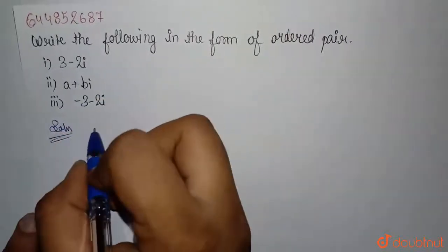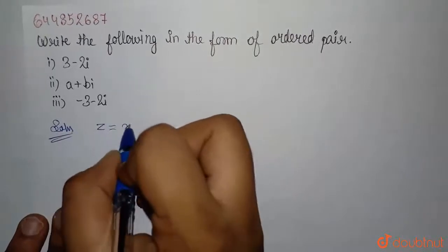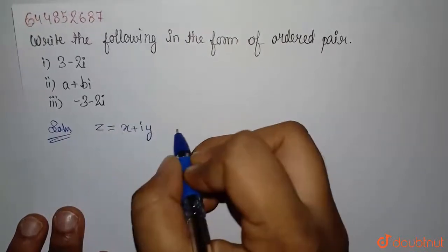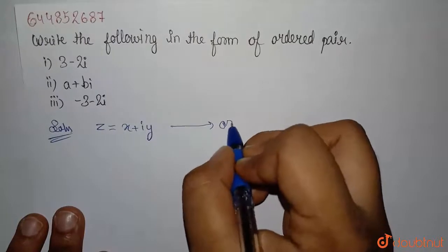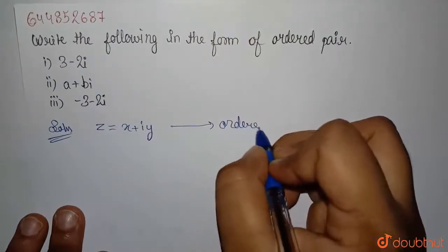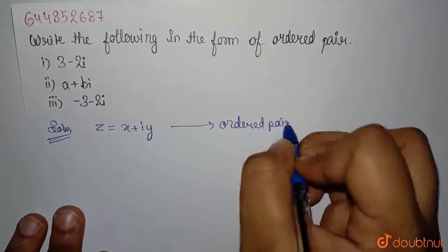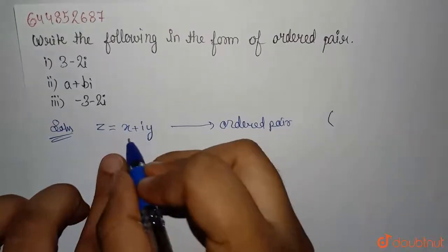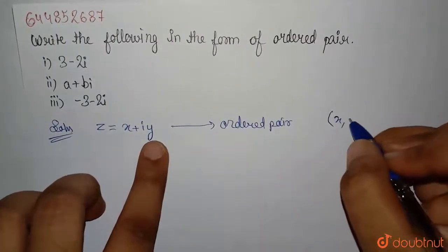So in the solution, suppose you have been given a complex number x plus iota y. If you want to write in the ordered pair form, you will write bracket x comma y.